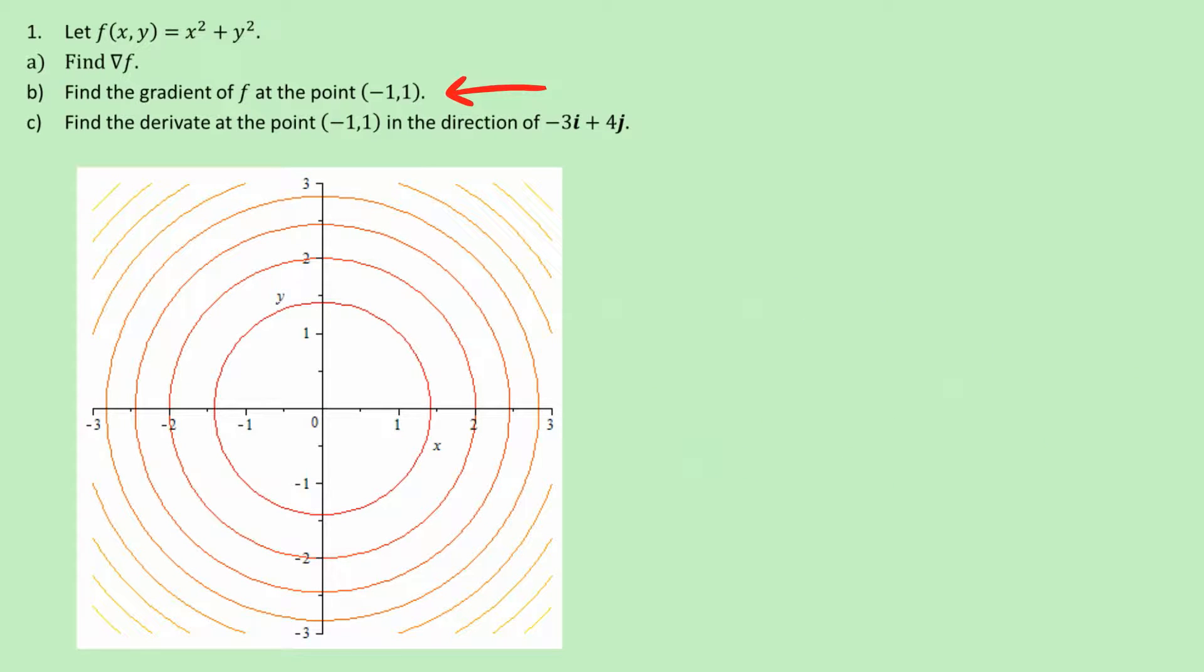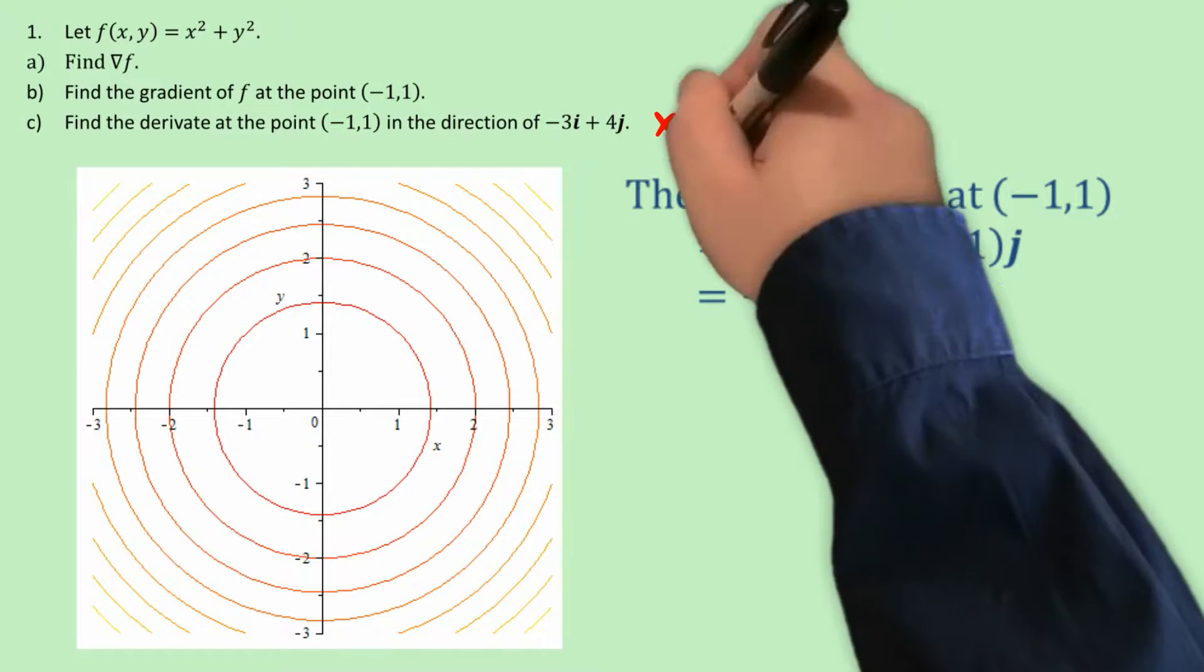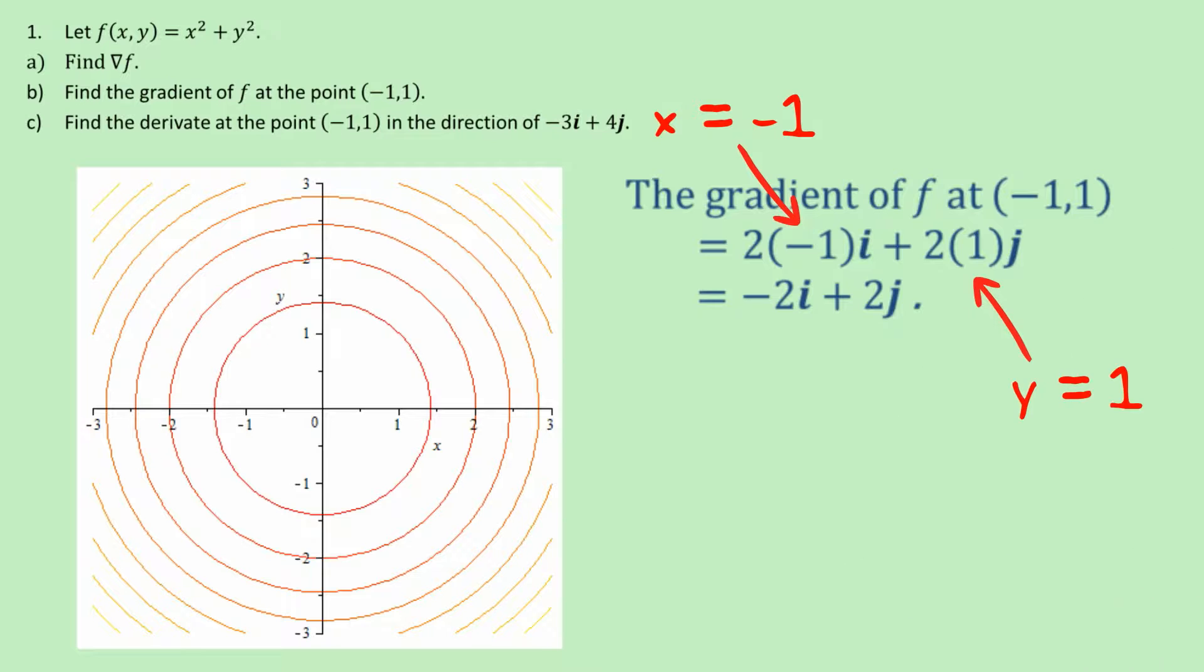Question b asks us to work out the gradient of f at the point (-1,1), and this is very easy once we've done part a, because in part a we worked out a formula essentially for the gradient at any point. So all we're going to do is say that the gradient of f at the point (-1,1) is equal to 2 times (-1) times i plus 2 times 1 times the vector j, and that just gives us -2i plus 2j.